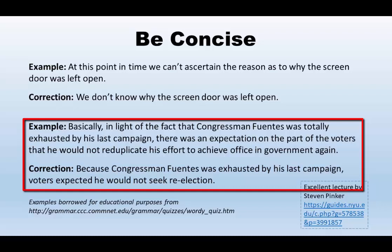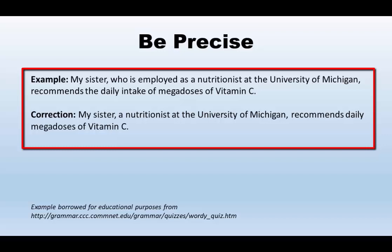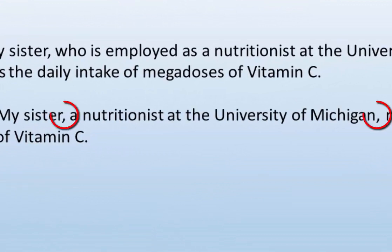This third example also has bloat: 'My sister, who is employed as a nutritionist at the University of Michigan, recommends the daily intake of megadoses of vitamin C.' My correction: 'My sister, a nutritionist at the University of Michigan, recommends daily megadoses of vitamin C.' And did you notice the parenthetical commas used with 'a nutritionist at the University of Michigan'? Just a little review to help. Train your brain.